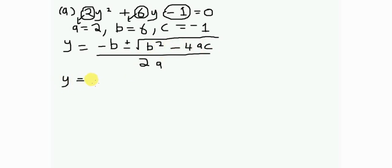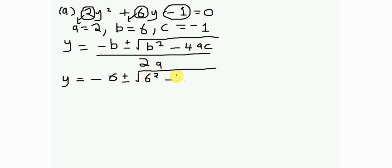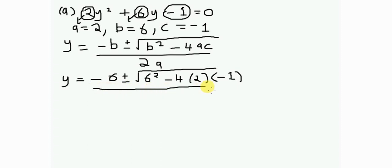Substituting the values: y equals negative 6 plus or minus the square root of 6 squared minus 4 times 2 times negative 1, divided by 2 times 2.